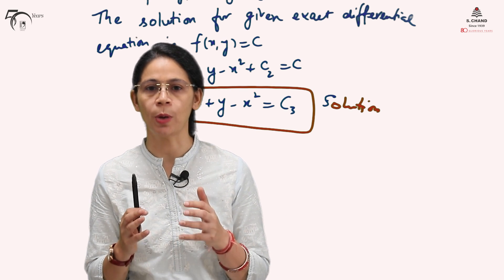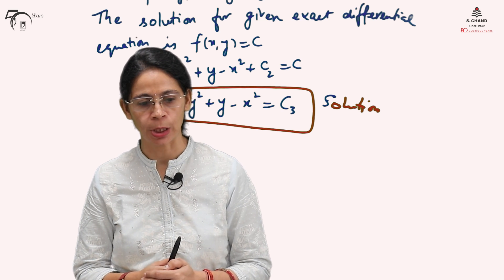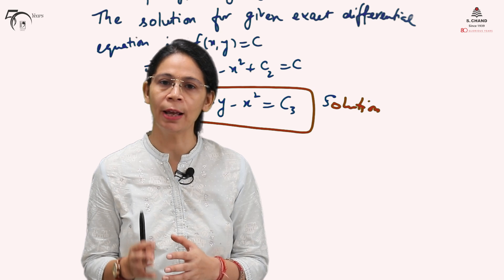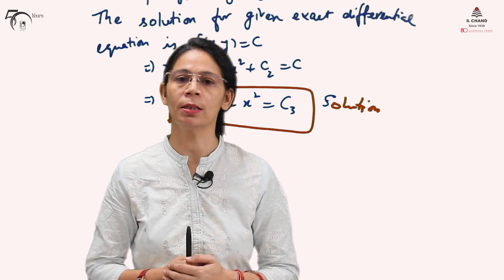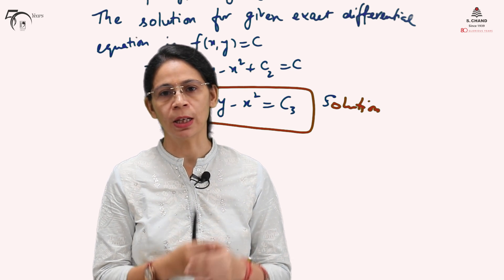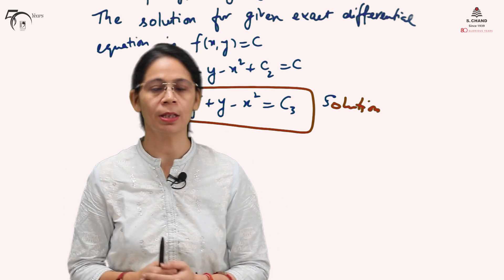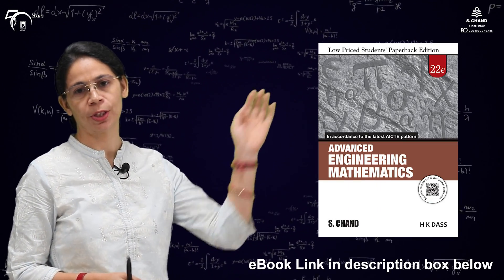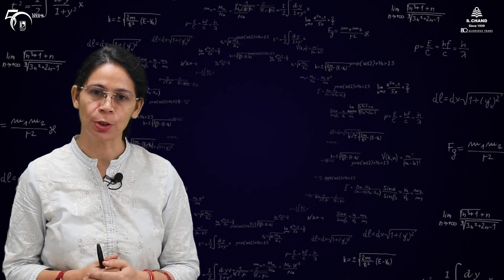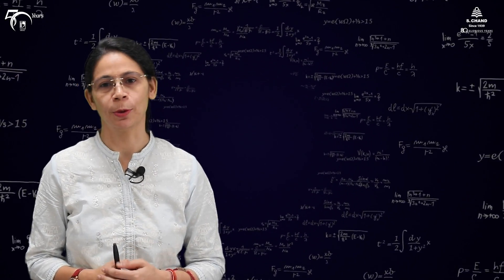In this video we learned how to identify whether a given differential equation is exact, and if so, how to find its solution. Any exact differential equation has a solution f(x,y) = c, where M = ∂f/∂x and N = ∂f/∂y. There are two solution methods: starting with M or starting with N to find f(x,y). For details, see the S.C.A.N Publishing book linked in the description. Please like, share, subscribe, and press the bell icon for notifications when new videos are uploaded. Thank you very much.